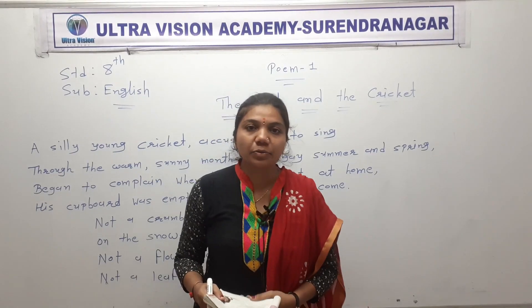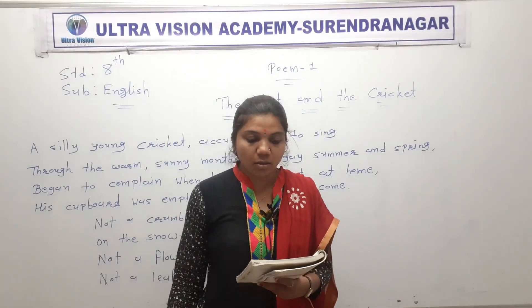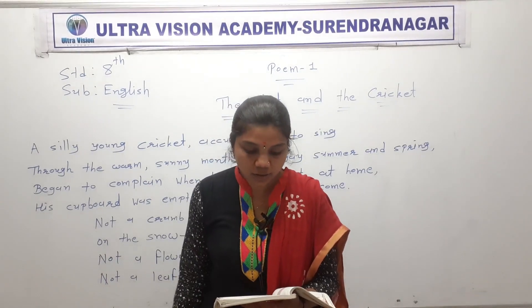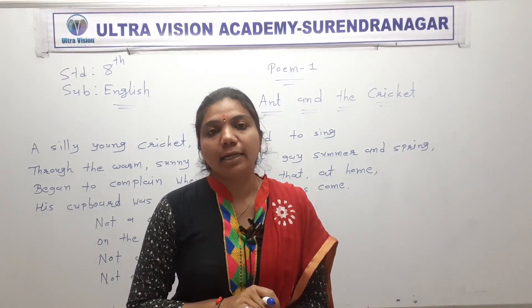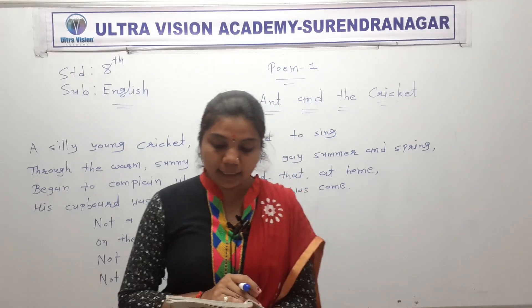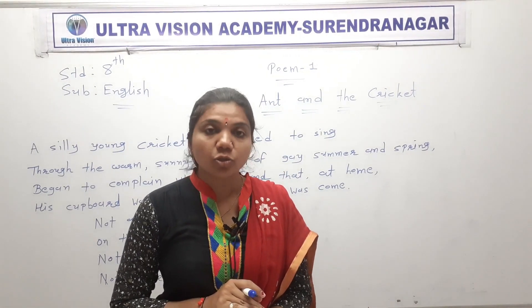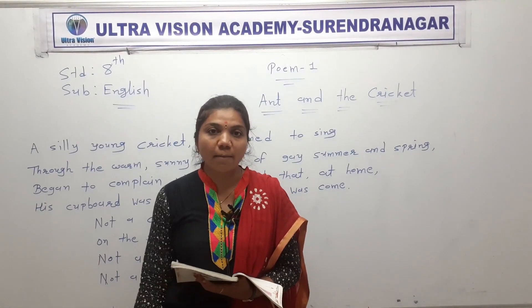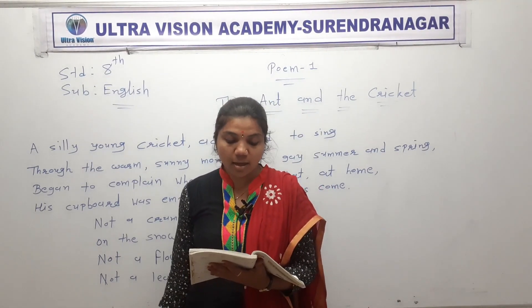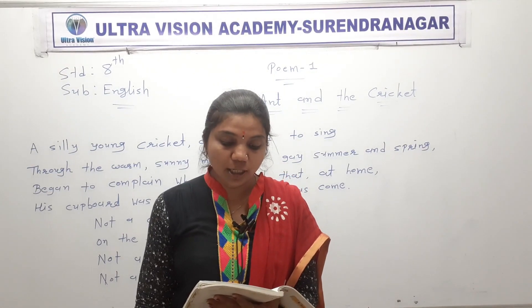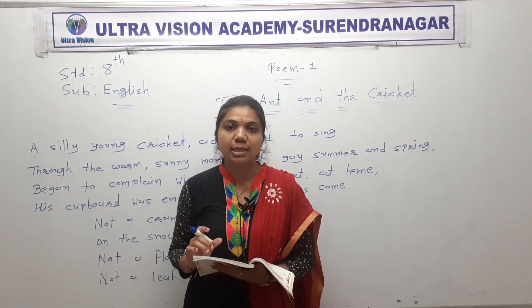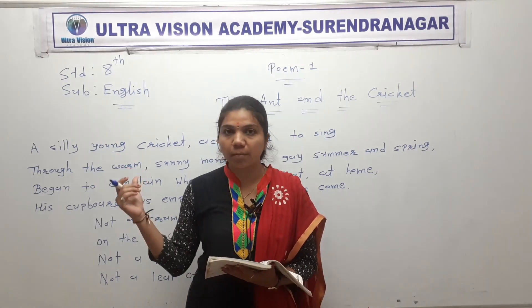Good morning everyone, today we are going to learn poem number 1, 'The Ant and the Cricket.' So open your page number 21 in your English book. The poem is about an Ant and a Cricket — 'ant' means city and 'cricket' means finger. Here we have a moral story, a fable story, from which we have to learn some lessons for our life. This poem is given to you.